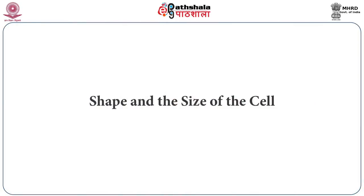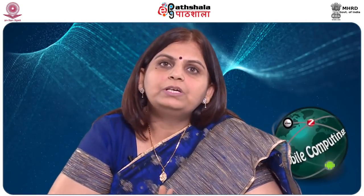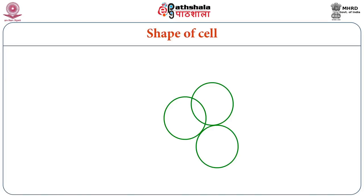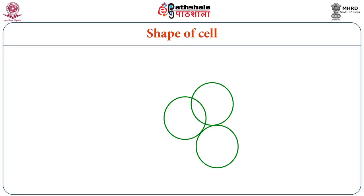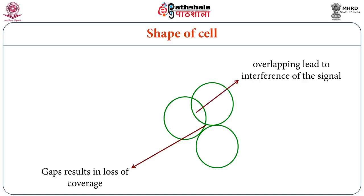Now we move to the topic of what should be the shape and size of the cell. Since the antennas on the base station are isotropic — radiating uniformly in all directions — the expected shape is a circle. But if we draw circles on paper and join them, two situations arise: either there will be overlap or there will be gaps. Gaps result in loss of coverage, and overlapping leads to signal interference.